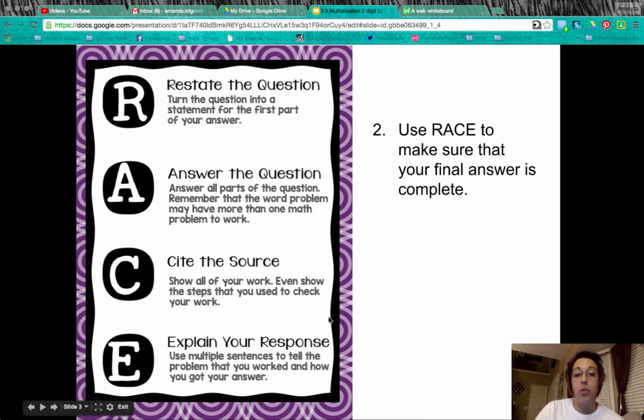For C, you want to cite your source. Show all of your work with math, even the steps that you use to check your work. And then E is explain your response. You want to use multiple sentences to tell the problem that you worked and how you got the answer. Remember, multiple sentences. This will help you make sure that you're getting a three on these word problems.